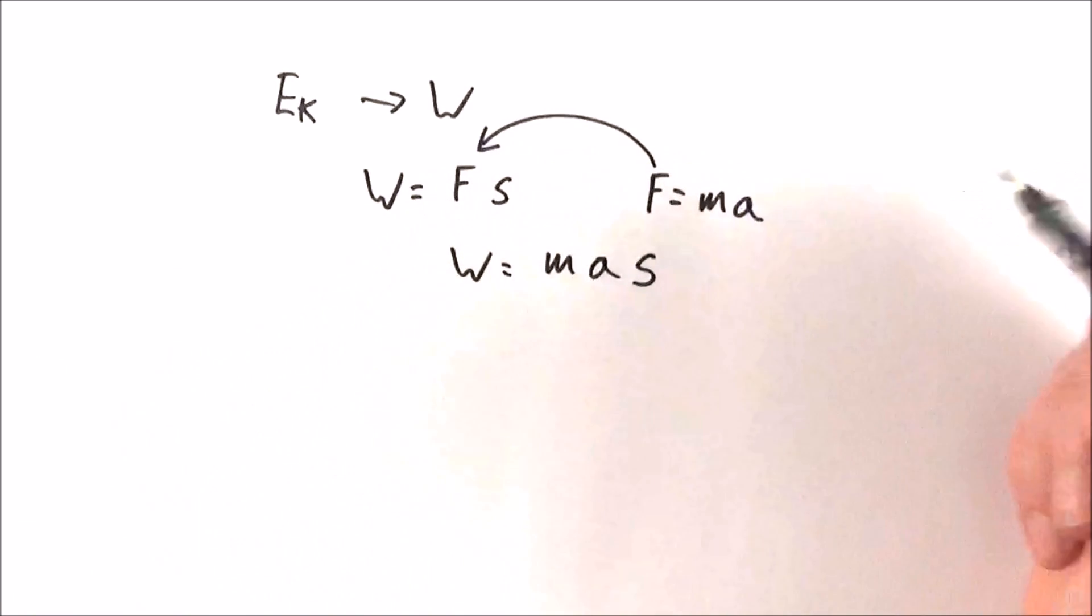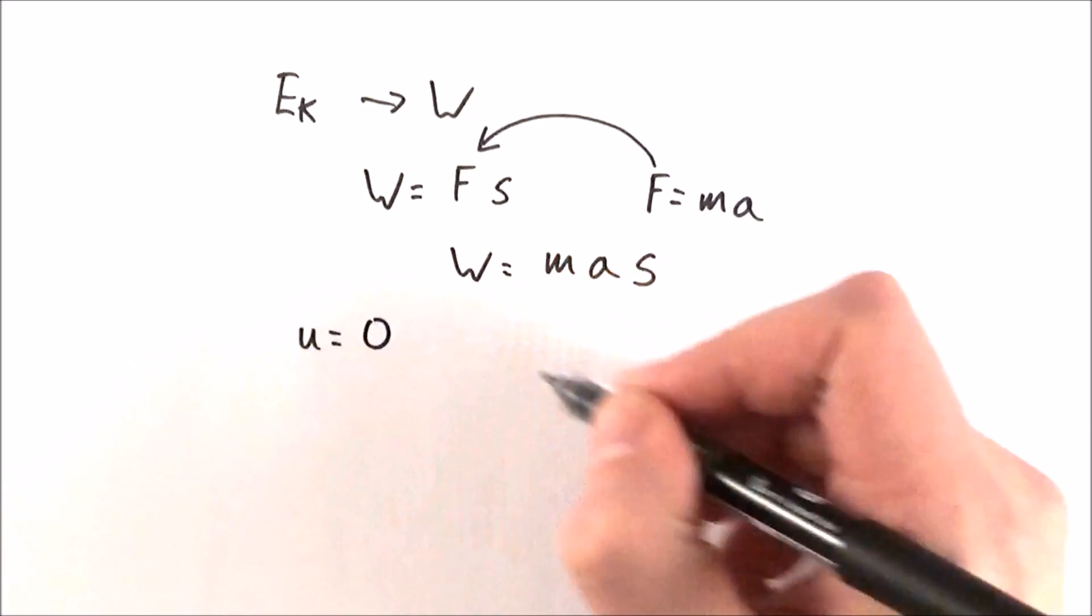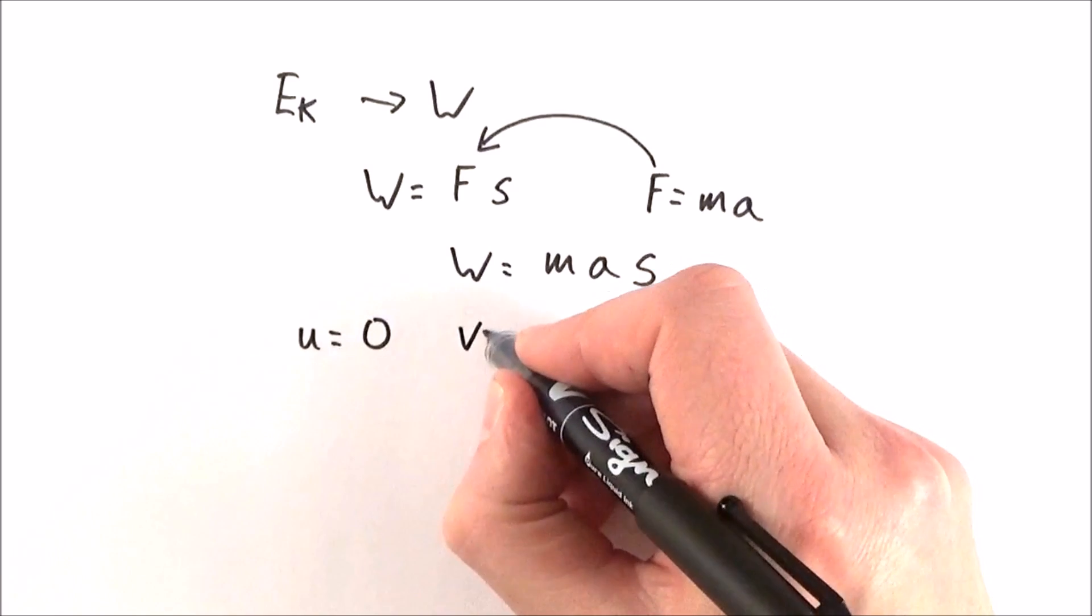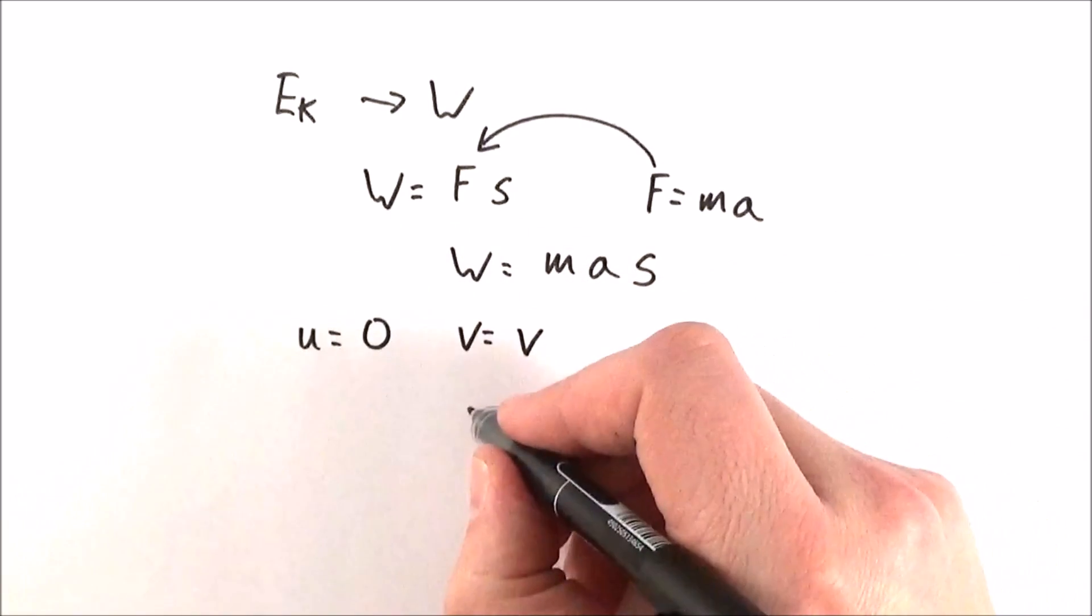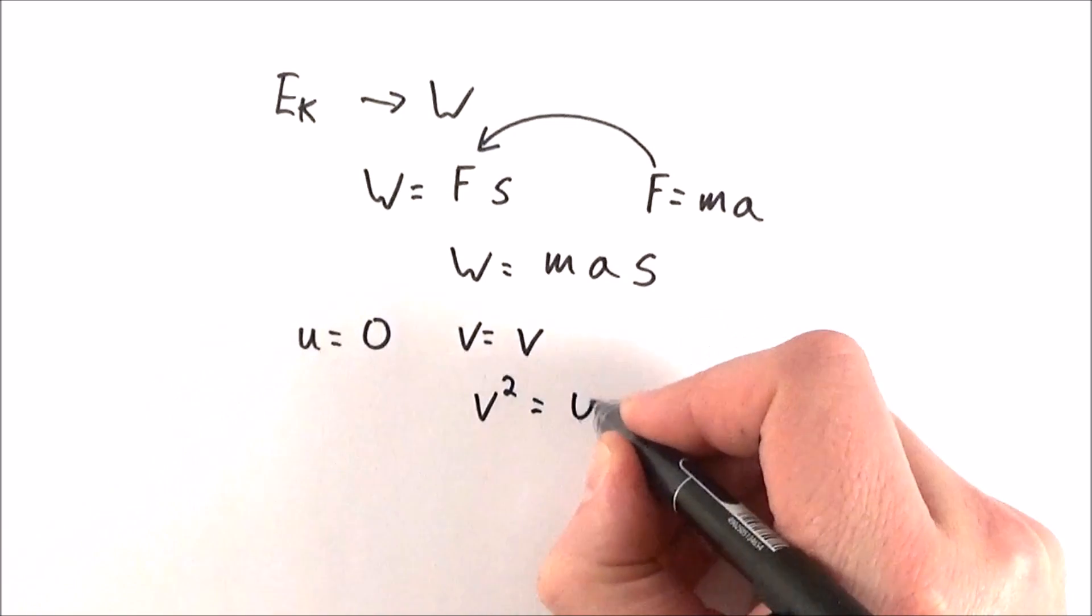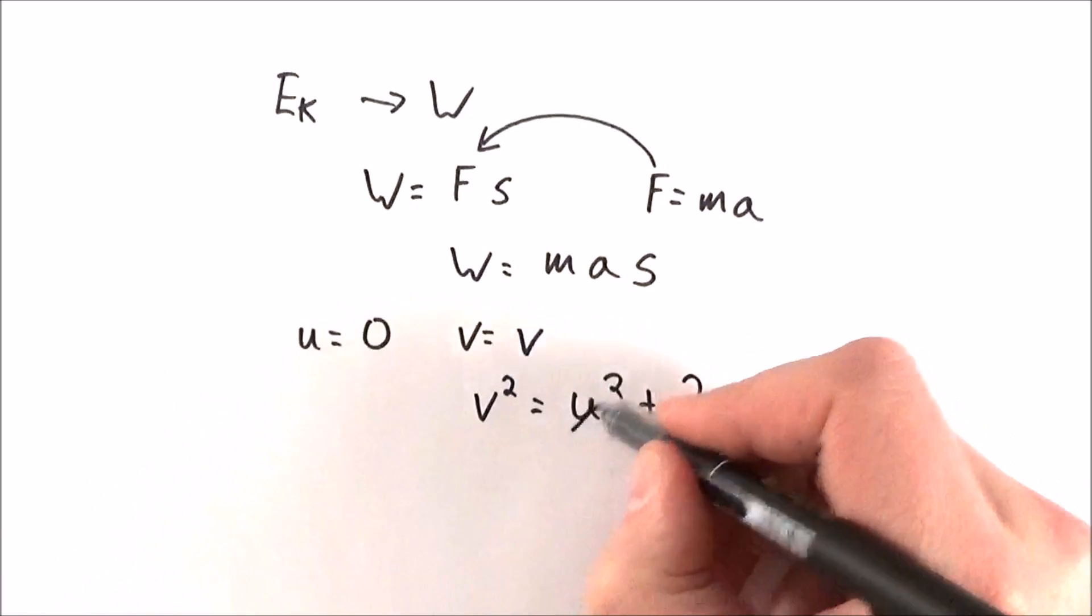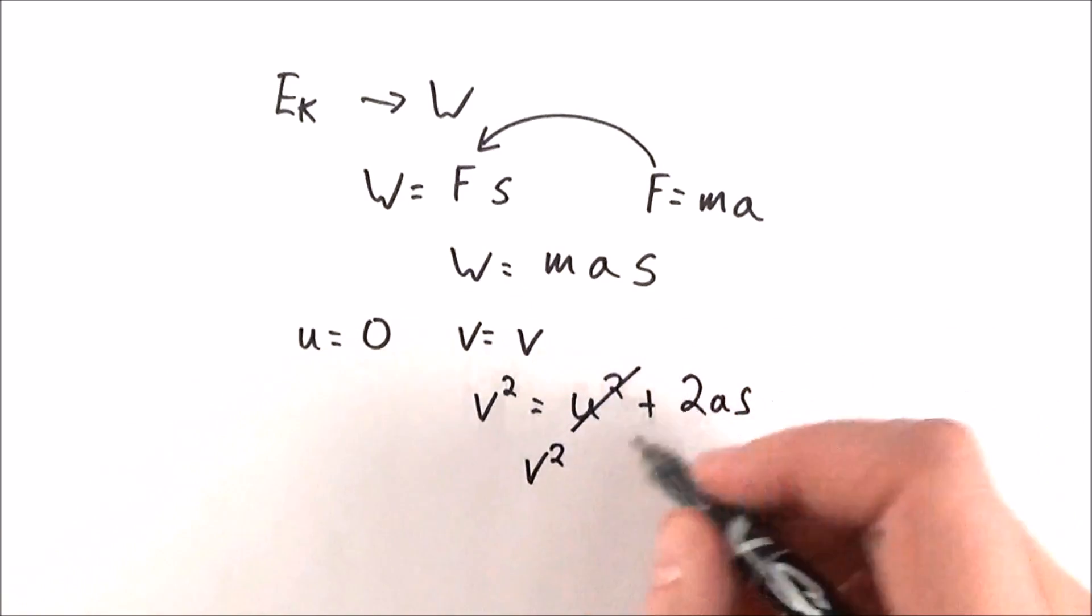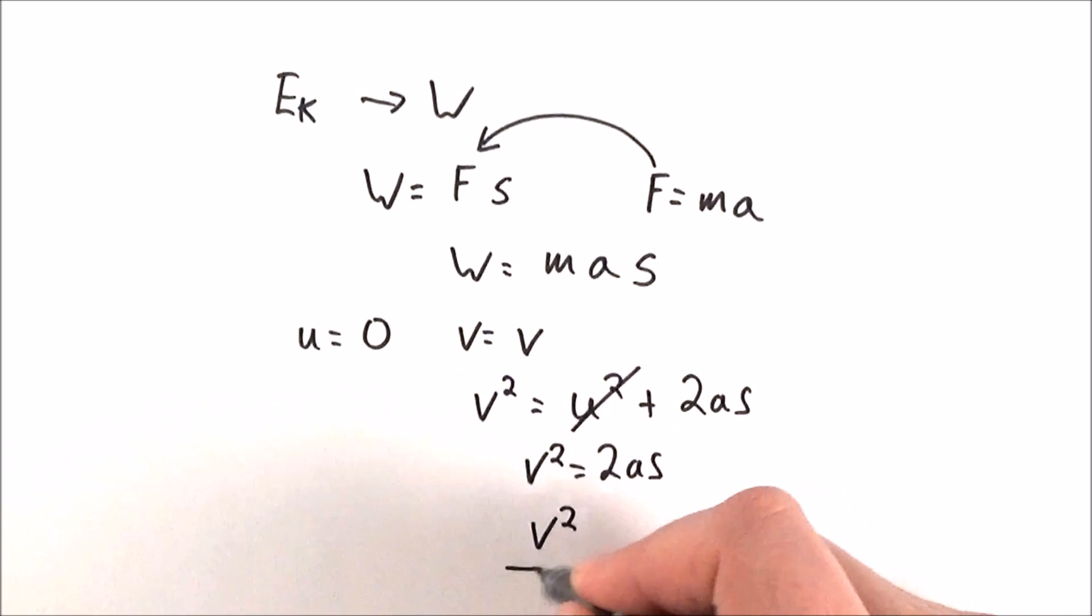However this doesn't give us a half v squared. But if we assume that an object starts at zero and is accelerated to a final velocity v, from the Suvat equation that you should remember, v squared is equal to u squared plus 2as. Now if u is zero, then we can say that v squared is equal to 2as, so v squared over 2 is equal to as.